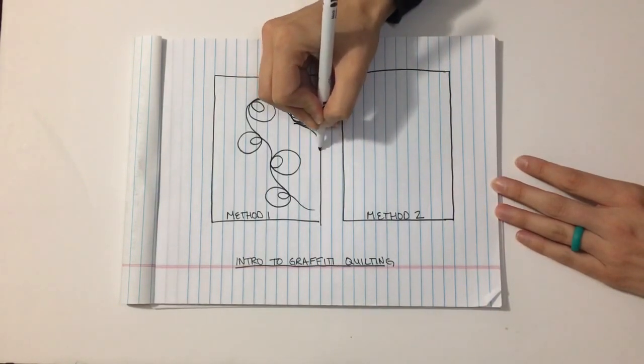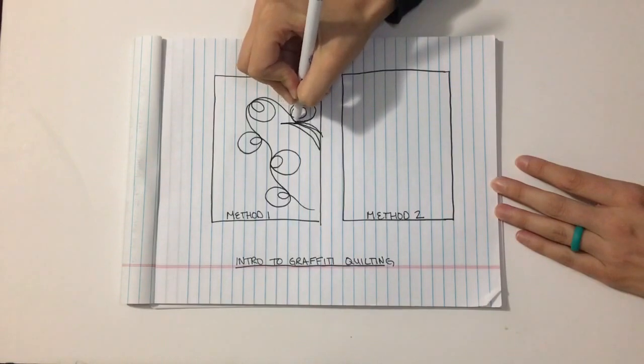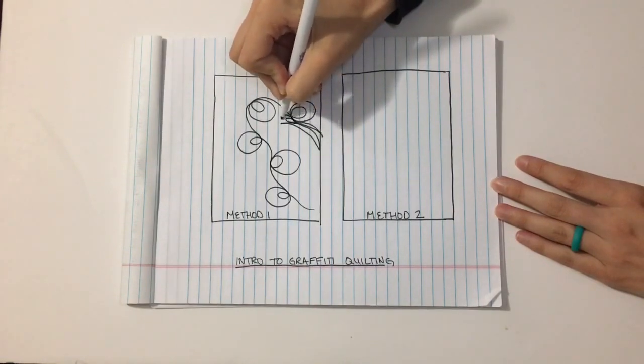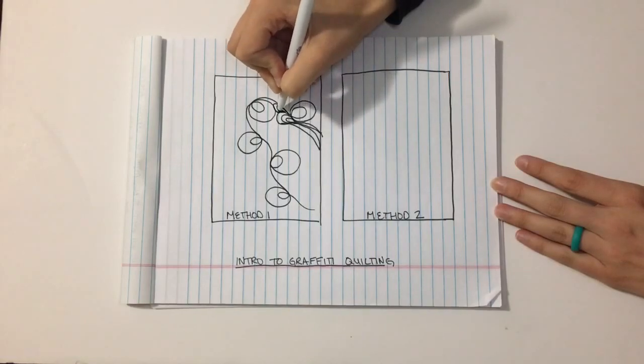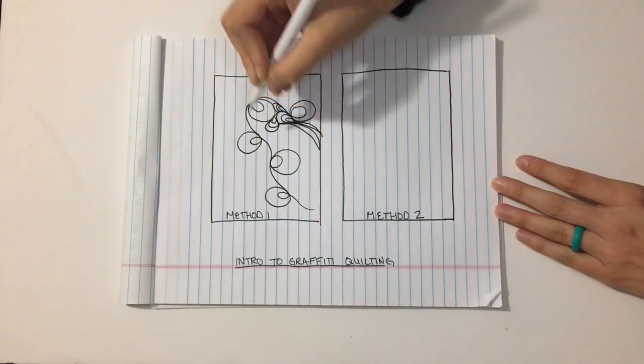So I might echo this swooping shape over and over again, and then add some paisleys to fill it in, which you'll notice that shape is very similar to the double loop. It'll add to the coherent look of the whole.